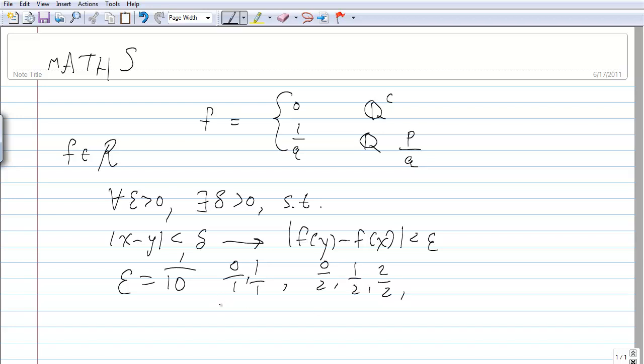0 over 3, 1 over 3, blah, blah, blah, 3 over 3, and then you can go this all the way until you get to 9 over 10 and 10 over 10.